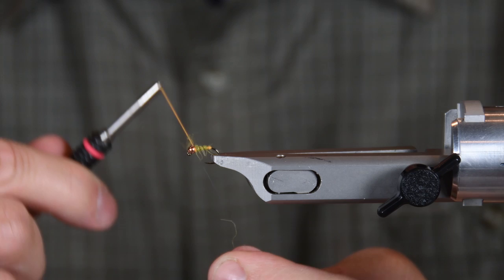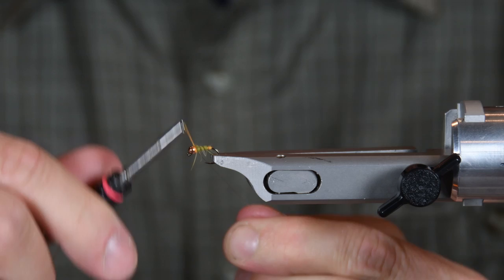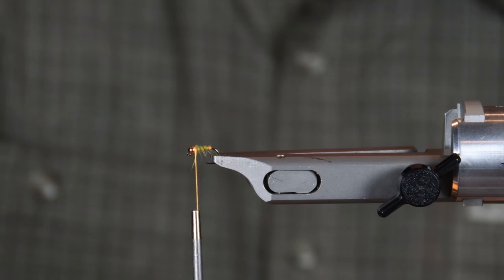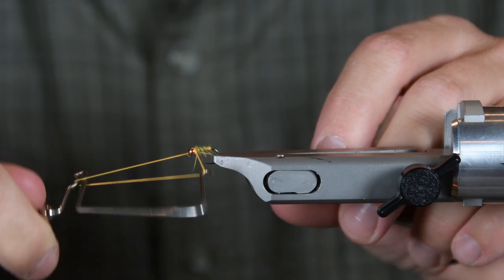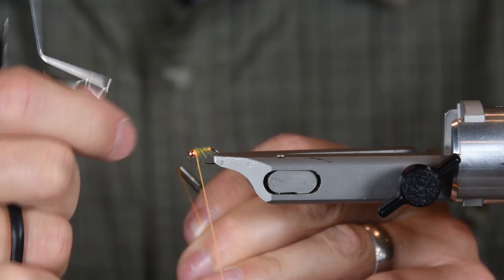Get that excess out of there, get in front of it, get behind it, snip it off. I'm going to get my whip finishing tool and I just want to make a hot collar right in there behind the bead. I usually like to do two just for added strength.